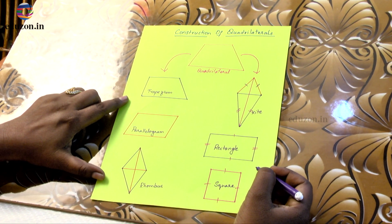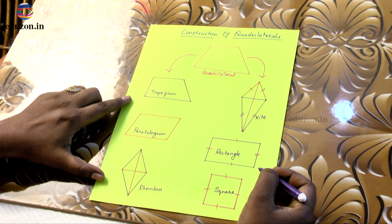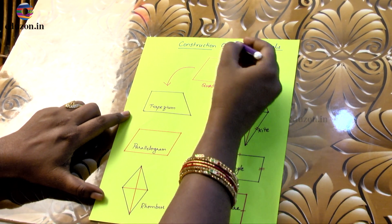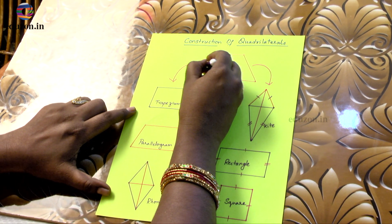Welcome back to the class. Today children, let us try to understand the chapter Construction of Quadrilaterals. We all know that a quadrilateral is a closed four-sided figure.